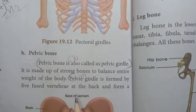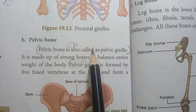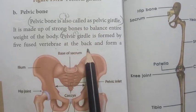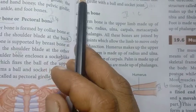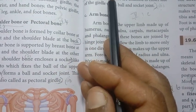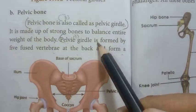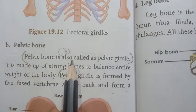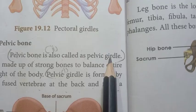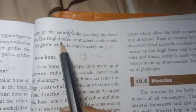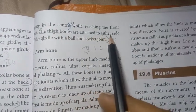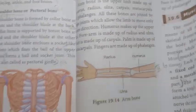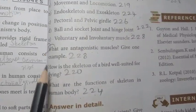Pelvic girdle: The pelvic girdle is formed by five fused vertebrae at the back and forms a cavity in the centre. The thigh bones are attached to either side of the girdle with a ball and socket joint.